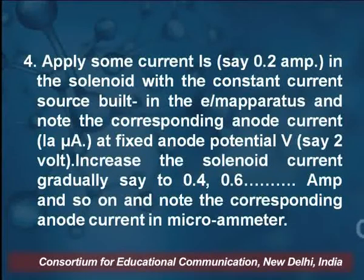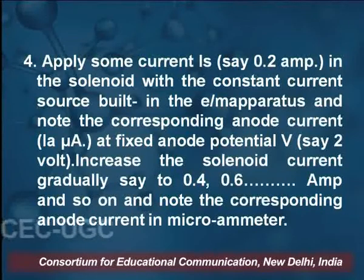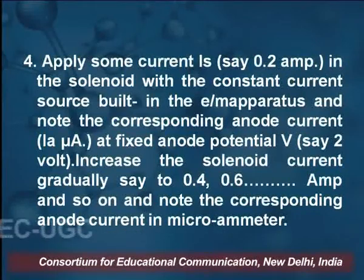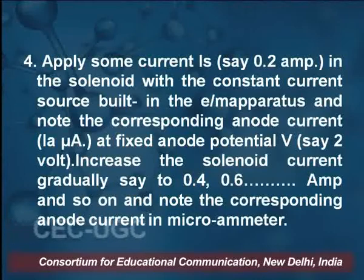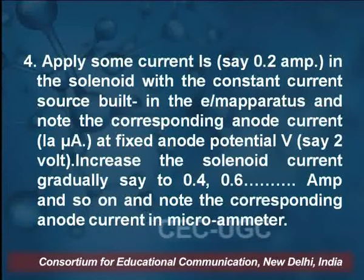In the next step, we apply a current of 0.2 ampere in the solenoid. By changing the current in the solenoid, its magnetic field changes. Applying solenoid current Is of 0.2 ampere with the constant current source built in the E by m apparatus, we note the corresponding anode current Ia in microamperes at the fixed anode potential of 2 volts.